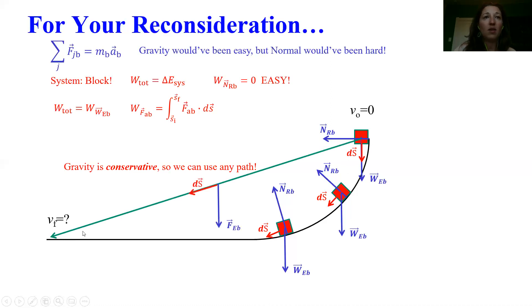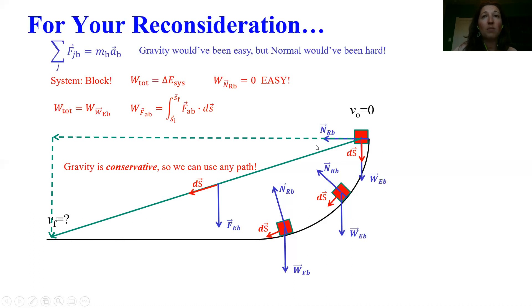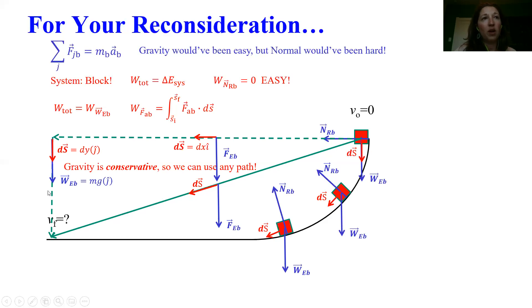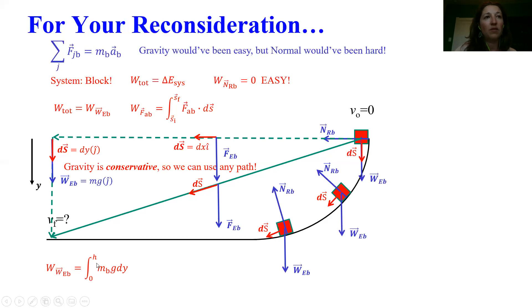I could pick a straight-line path between the two points, which is effectively the same example we just worked out. Or I could pick a path that goes perfectly horizontal and then perfectly vertical. Along the perfectly horizontal region, any force pointing vertical — like gravity — does no work because force and displacement are perpendicular. But along the vertical direction, gravity will do work, making it a straightforward calculation. Picking positive y pointing down, the work done by gravity is the weight force times dy integrated from zero to h, giving mgh. With h equal to d·sinθ, we get the same answer.